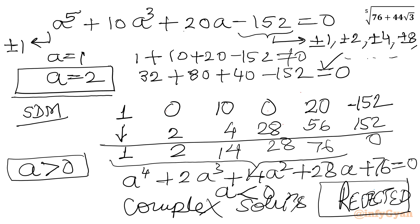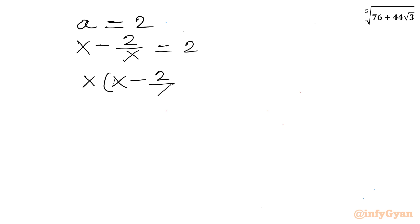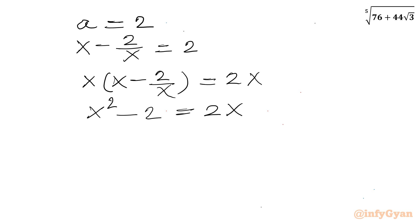So the value we are going to accept is a equals 2. Since a was our substitution x minus 2 over x, we have x minus 2/x equals 2. Multiplying both sides by x gives x squared minus 2x minus 2 equals 0. This is a quadratic equation. We can use the quadratic formula: x equals (-b plus or minus root(b squared minus 4ac)) over 2a.